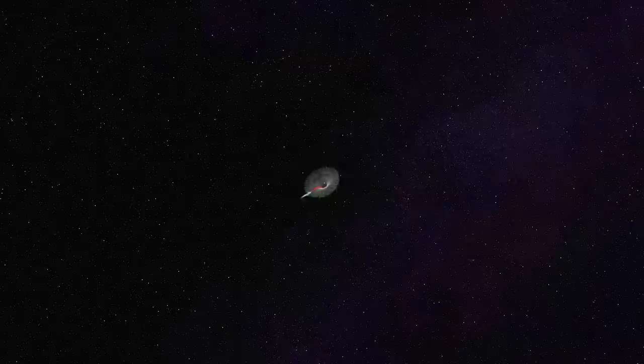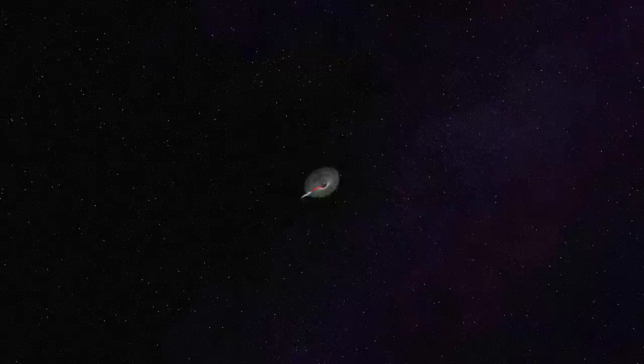And since the traditional twin paradox is formulated in the absence of gravitational considerations, this means it occurs in flat spacetime. But what happens if we throw gravity into the mix? To answer this question, the authors of the 2009 paper devised a simple setup.